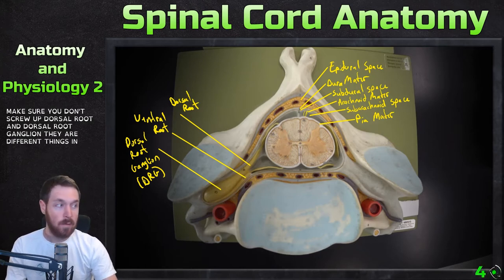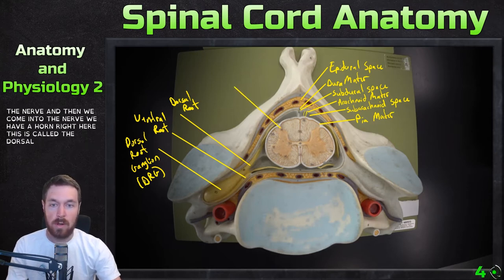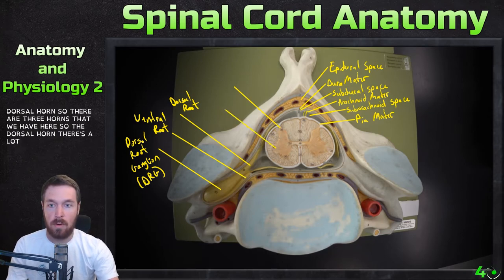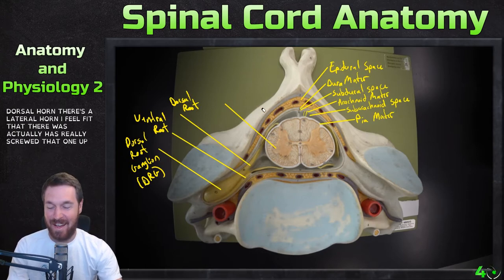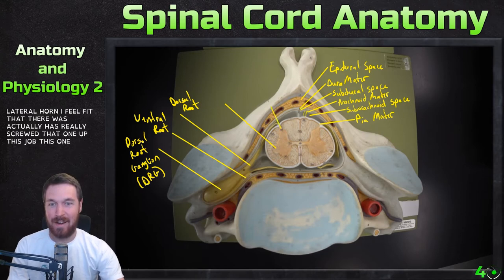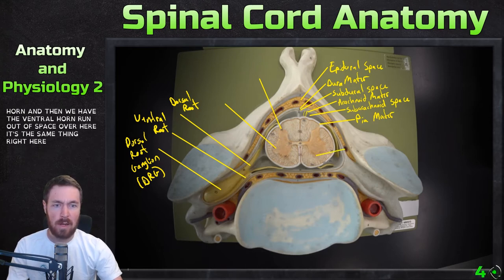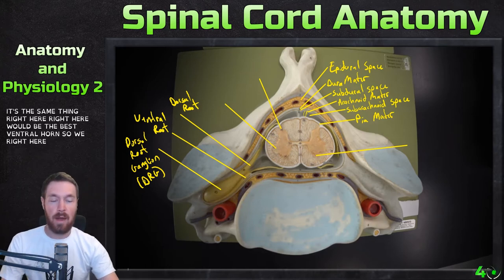So then we come into the nerve, and when we come into the nerve, we have a horn right here — this is called the dorsal horn. There are three horns that we have: there's a dorsal horn, there's a lateral horn, and then we have the ventral horn. So right here would be the ventral horn. We see these different layers right here that are covering it.